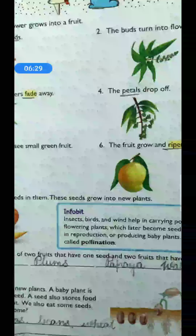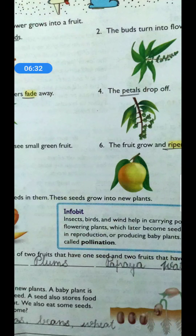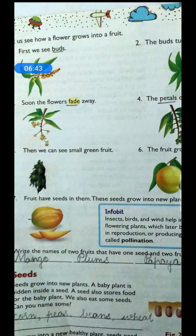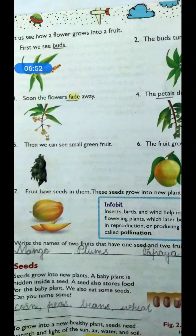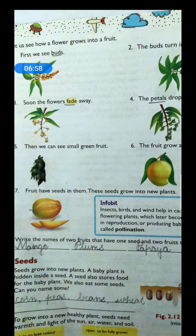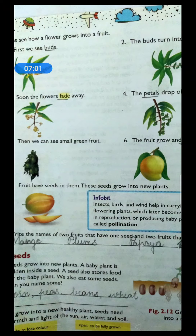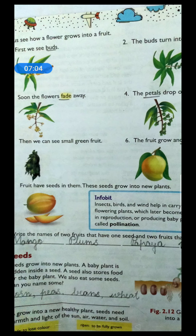After losing their color, what happens in the fourth step? The petals drop off. The petals of the flowers — petals are the panchuria, the flower petals — they also drop off. The flower sheds all its petals; they all fall down. After that, in the fifth step, we can see a small green fruit. Just as first a bud formed, from the bud we got a flower, then the flower faded away, then what happens — the petals drop off, and then you can observe a small green fruit.